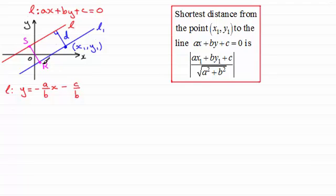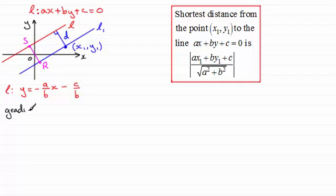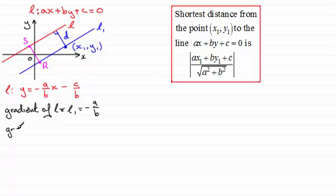So what I'm going to do is find out what the coordinates of r and s are, and then I'm going to use Pythagoras' theorem to get the distance sr, which will clearly be the same as the length d. It makes the algebra a lot easier if I adopt this method. Since L and L1 are parallel, they share the same gradient — in other words, minus a over b. And that allows me to work out the perpendicular gradient, the gradient of rs. A perpendicular gradient is the negative reciprocal, so that gives us b over a.